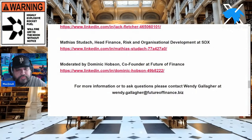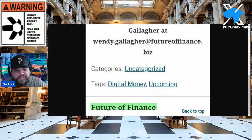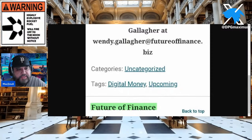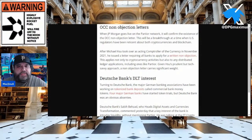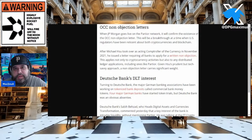This is significant — not just Gilbert Verdian being on the panel, but the Future of Finance conference itself. Where do finality, the Partior network, and the ideas of the regulated liability network fit into the future of money? This is highlighted here, and I want to tie in some deep-dive material about how the SEC feels about this. The bottom line is this: there's the thing called OCC non-objection letters.